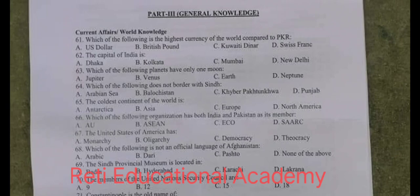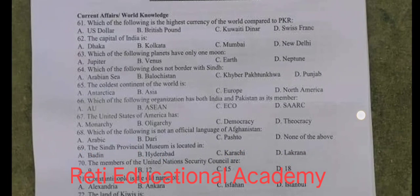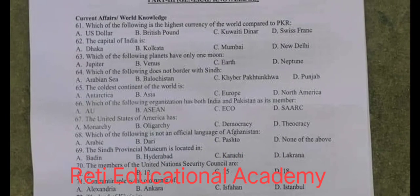Question number 61. Current Affairs World Knowledge. Which of the following is the highest currency of the world compared to PKR? The right answer is C. Kuwaiti Dinar is the highest currency compared to PKR.